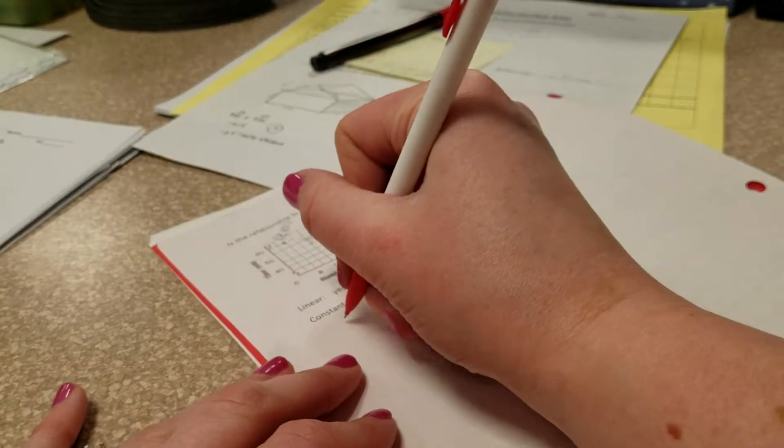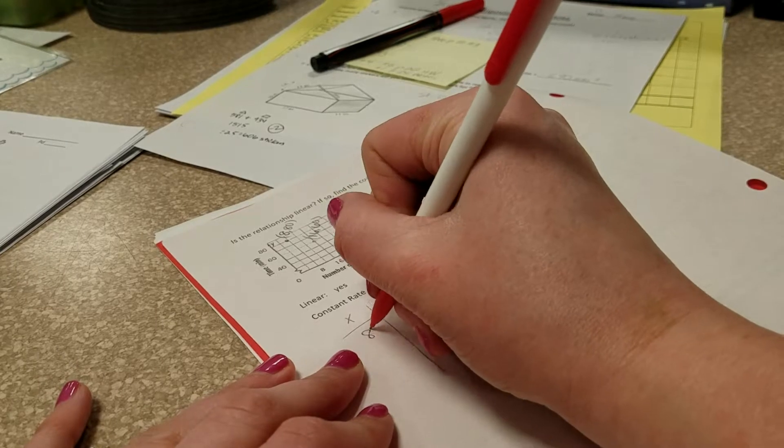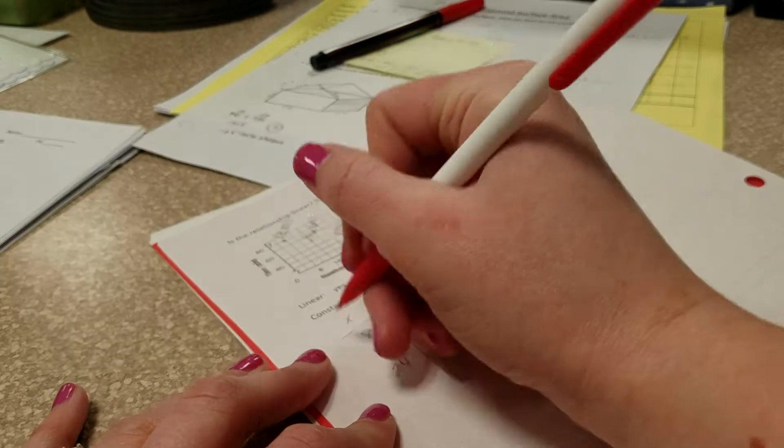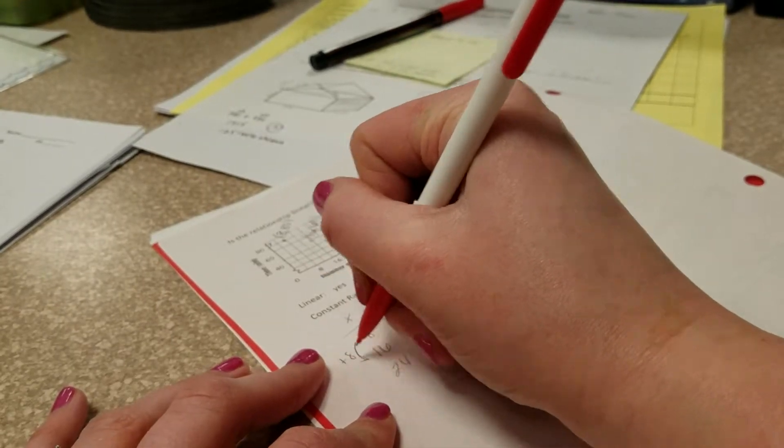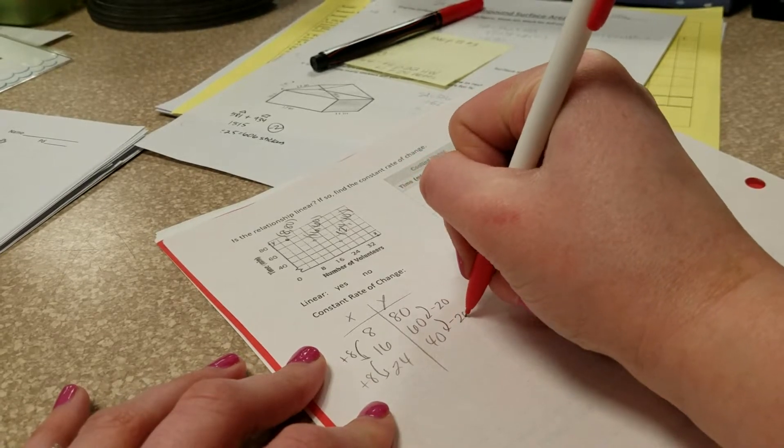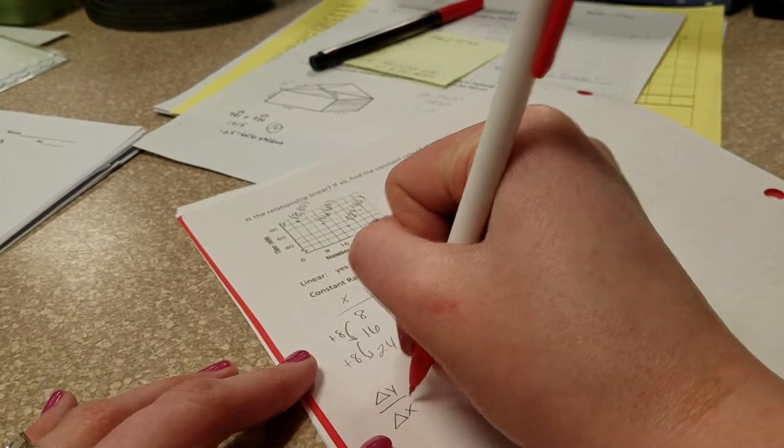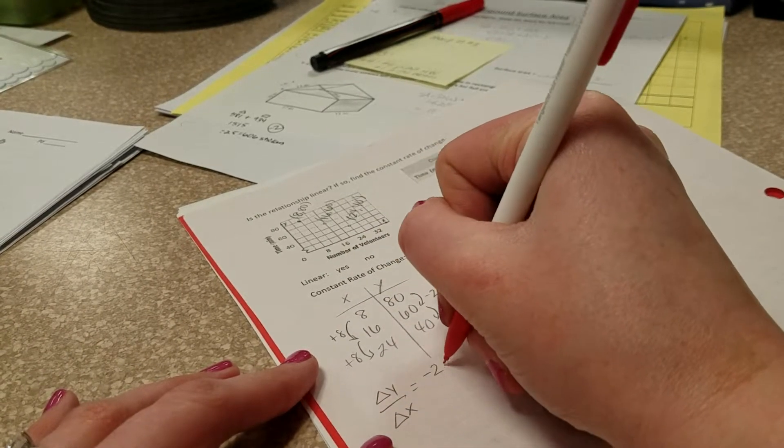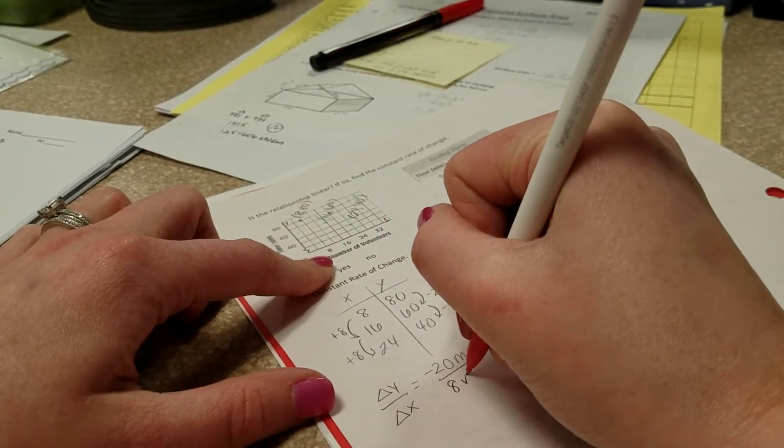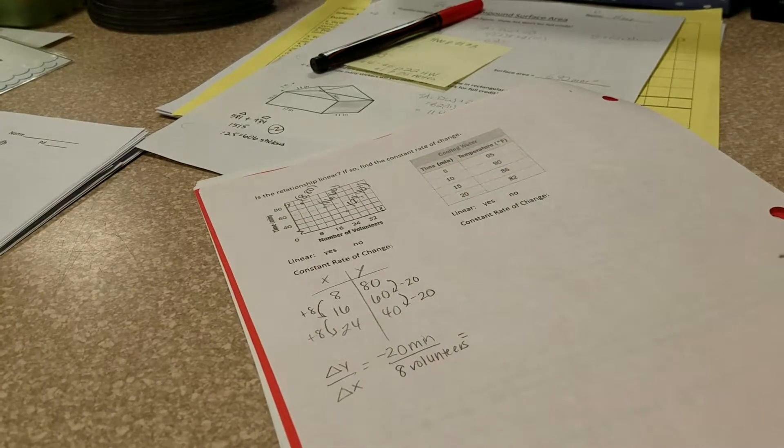So what we can do is actually, let's make an xy chart to kind of make our life a little bit easier. So we have 8,80, 16,60, and 24,40. The x values increase by 8, and the y values, it looks like they're decreasing by 20. So our rate of change is delta y over delta x. So it's negative 20 minutes per 8 volunteers.